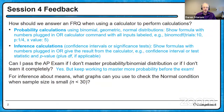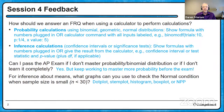Another question from a previous session: for inference about means, what graphs can you use to check the normal condition when the sample size is small — less than 30? The answer is you can use a dot plot, a stem plot, a histogram, a box plot, or a normal probability plot. Any of those are perfectly good graphs to use to discuss why you believe the population distribution is approximately normal.